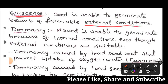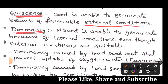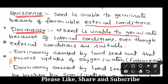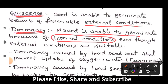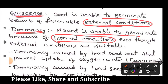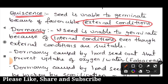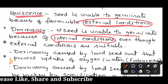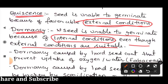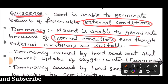So to clarify: quiescence is when the seed is unable to germinate due to unfavorable external conditions — once external conditions become suitable, germination occurs. Dormancy, on the other hand, is not caused by external factors; even when external conditions are suitable, the seed still does not germinate due to internal causes.